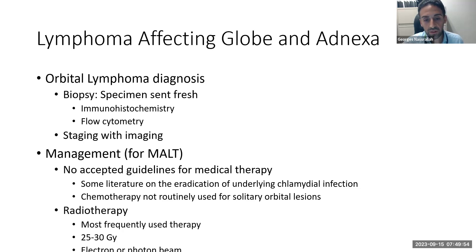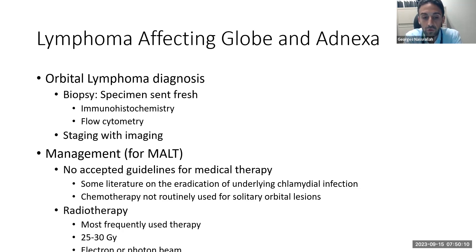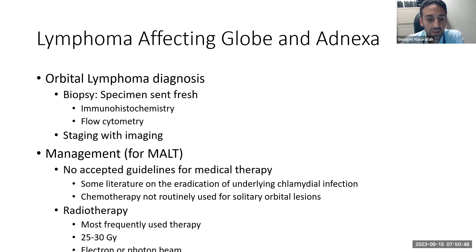Management of MALT lymphoma: there are no accepted guidelines for medical therapy. Some literature suggests a high prevalence of Chlamydia psittaci infection in these patients, and treating the underlying chlamydia can aid in remission. Chemotherapy is not routinely used for solitary orbital MALT lymphoma — about 75% are solitary lesions without systemic involvement. Radiotherapy is the mainstay at 25–30 gray, although protocols using lower doses exist. Electron or photon beam may be used, though availability is resource-dependent.